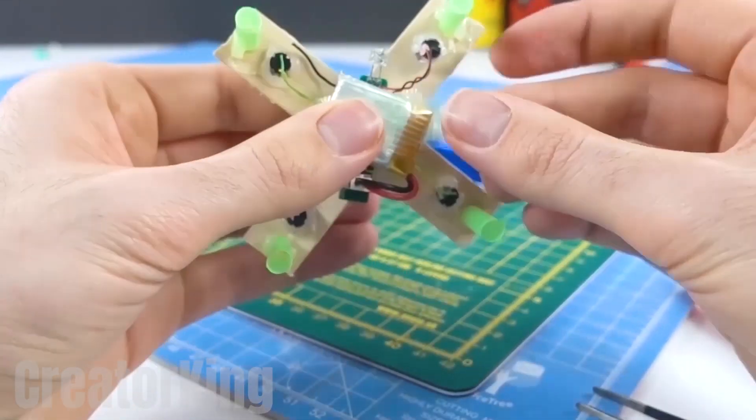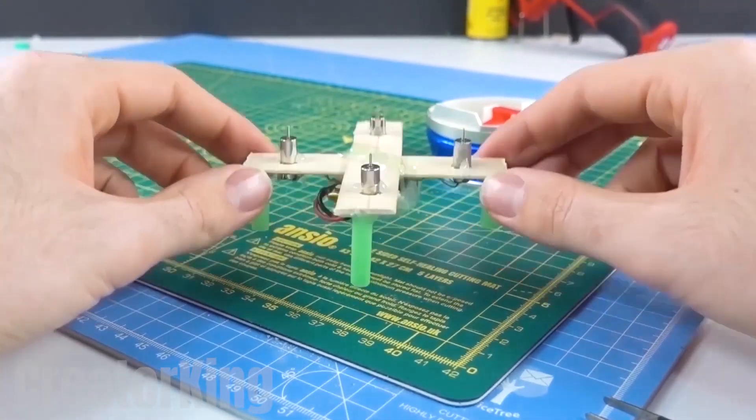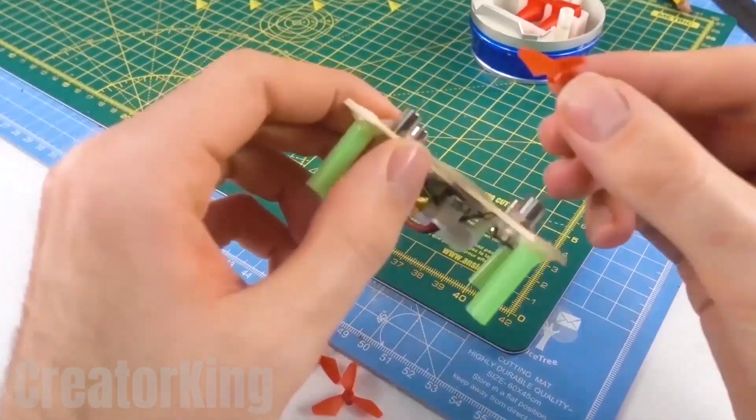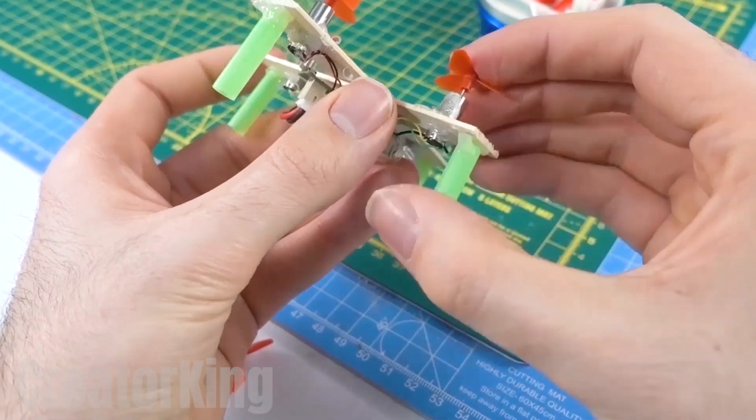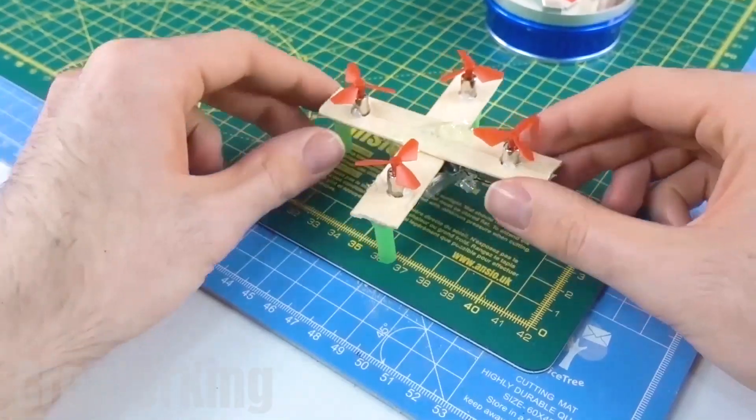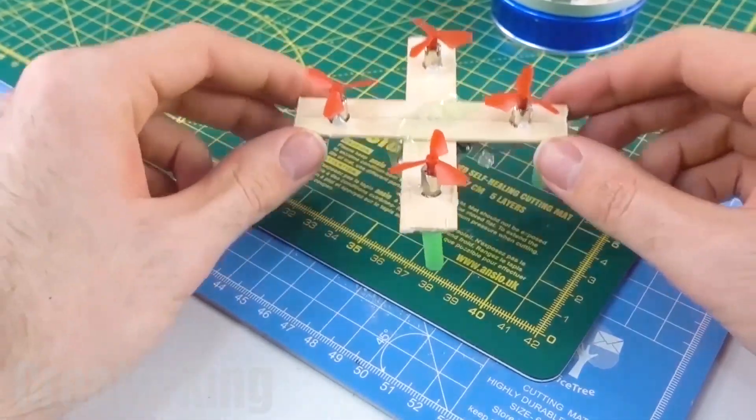The most important part are the propellers with which it will take flight. Place four of them on the pivots of the small rotors. I hope you're satisfied. I have fulfilled your dream of having a small homemade drone.